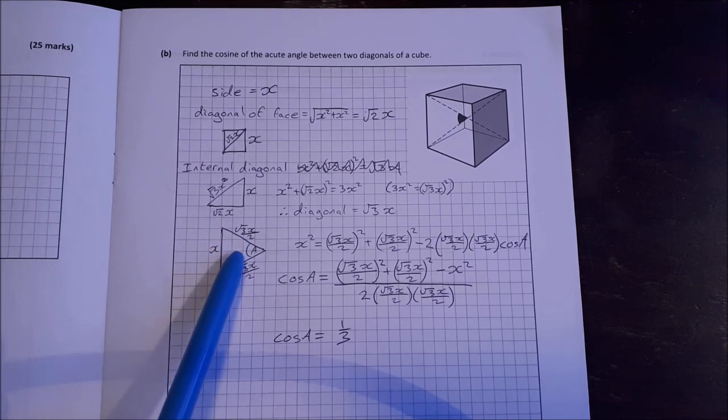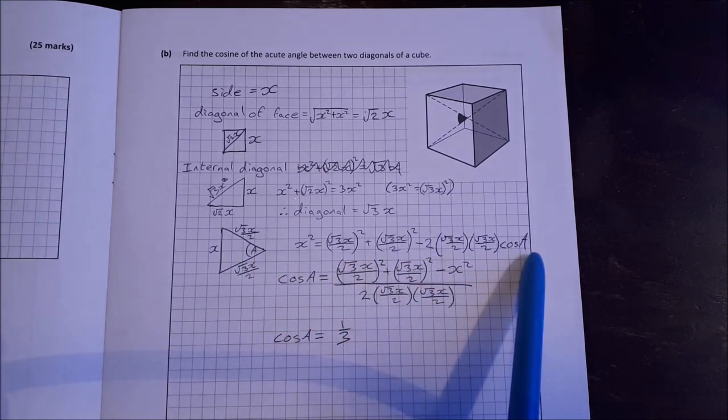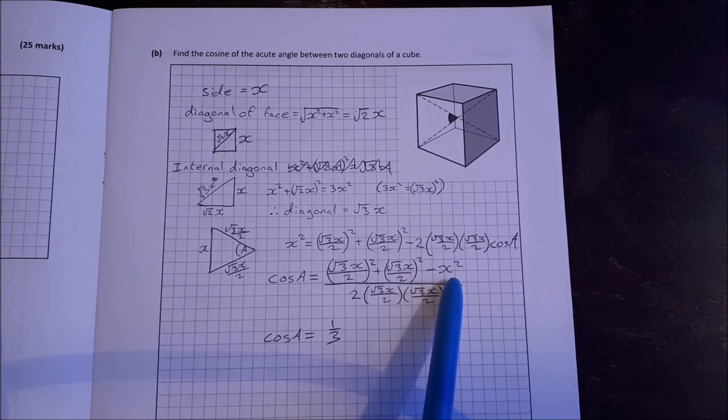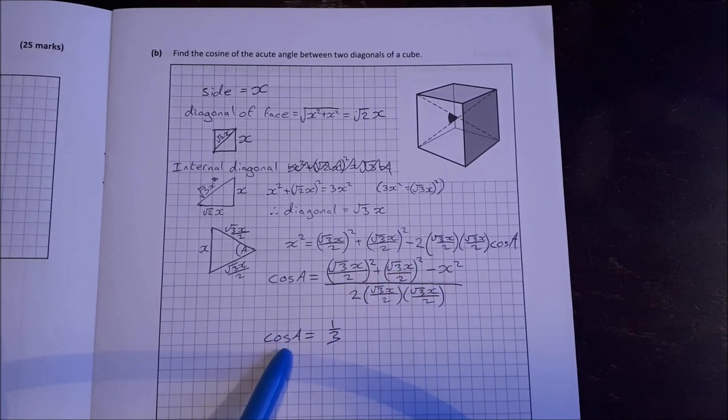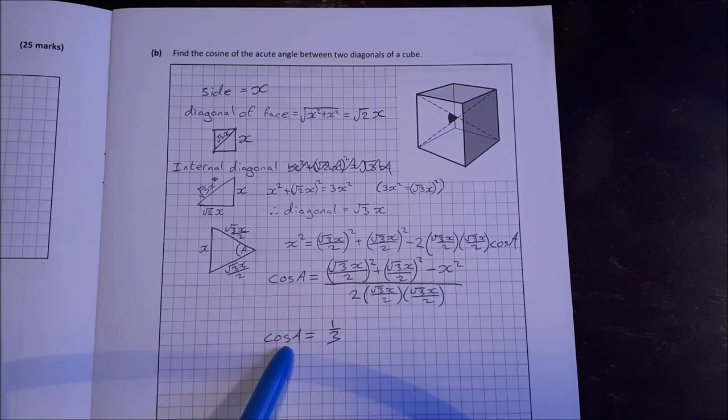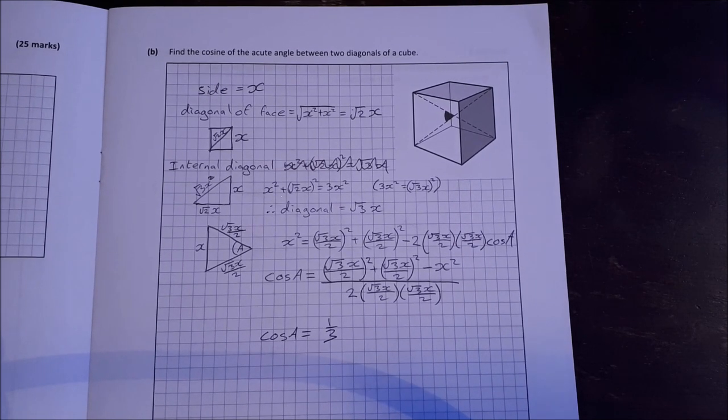So now that gives us a triangle where we have side x, side root 3 over 2x and another side root 3 over 2x with an angle a. This is the angle a that we're looking for. So we can use the cosine rule. Isolate cosine. Work through the algebra here. And then we end up, the x's will cancel and it'll all work out to be cosine of a is equal to one third. Again, any questions just ask in the comments below.